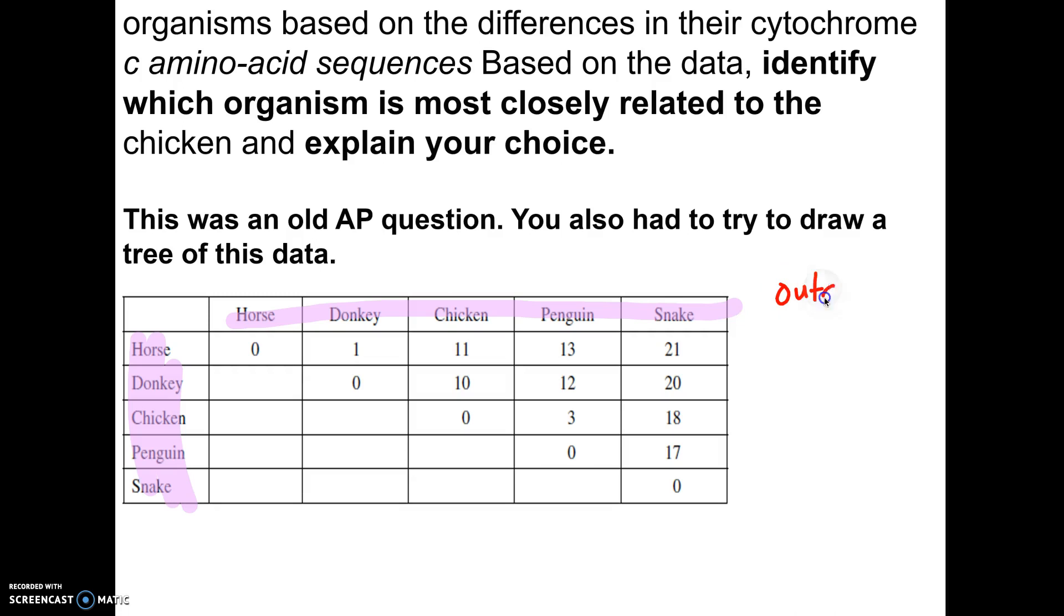A couple of questions they asked. Who is the outgroup in this? Well, in the outgroup, you would be looking for the most amino acid differences. So if I compare these organisms to each other, for example, the donkey to the chicken, the chicken to the penguin, the donkey to the horse. The one with the most differences is the snake. He's totally different from everybody. So my outgroup would be the snake.